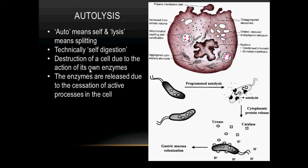First, autolysis. Auto means self, while lysis means splitting. Put them together and you get self-digestion. So this is when a cell is destroyed by the action of its own enzymes. These enzymes are actually released as a result of the cessation of the active processes that would otherwise occur in a normal healthy cell.